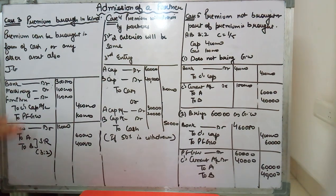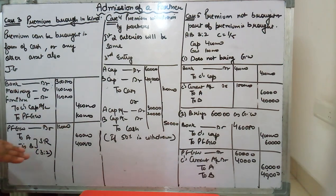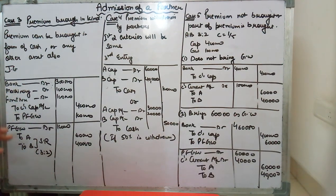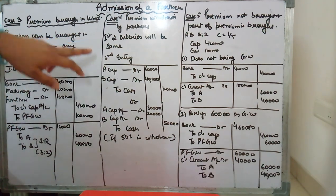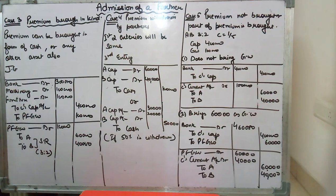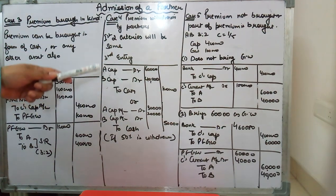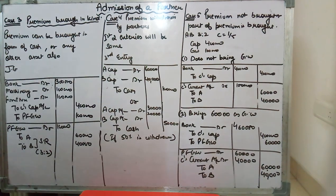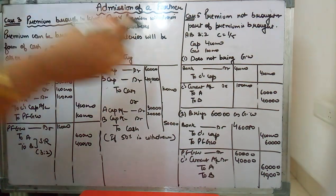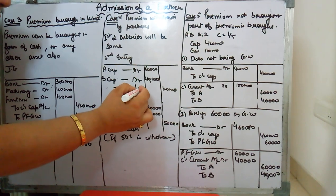The next case is when the premium is withdrawn by partners. Once the premium is distributed to A and B — say A gets 60 and B gets 40 — if nothing else is given, just those two entries are needed. But if the question states the partners have withdrawn the premium, then after those two entries you must debit A and B's accounts. Since the money is going out of the business, cash or bank account will be credited.